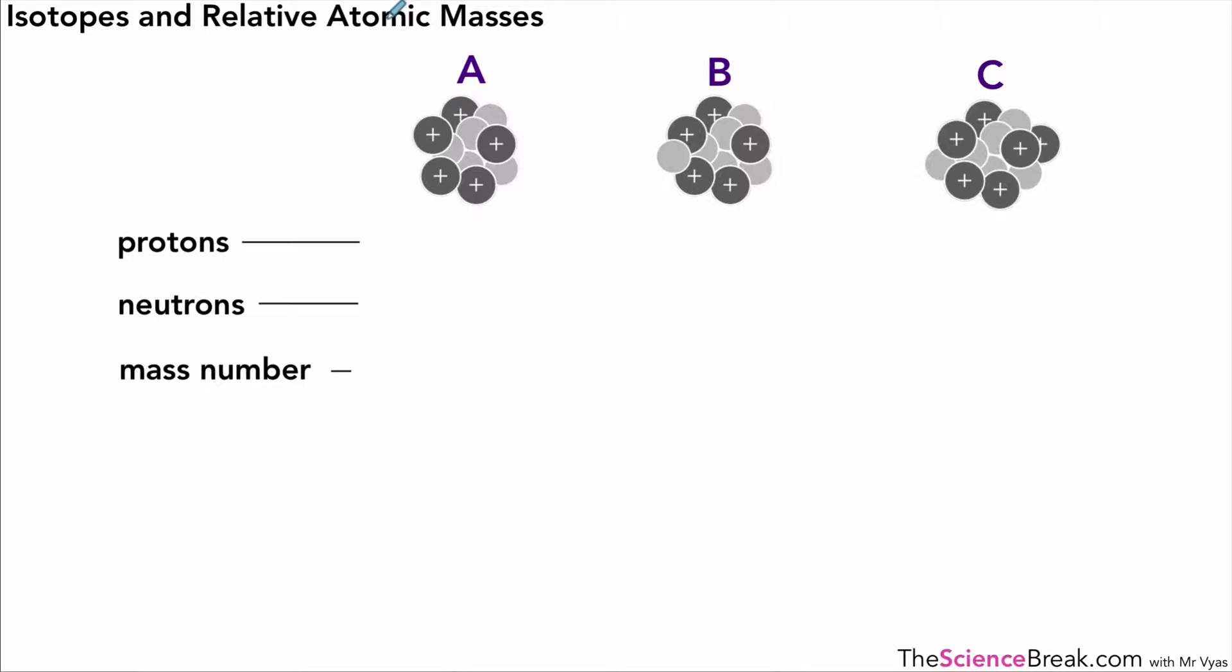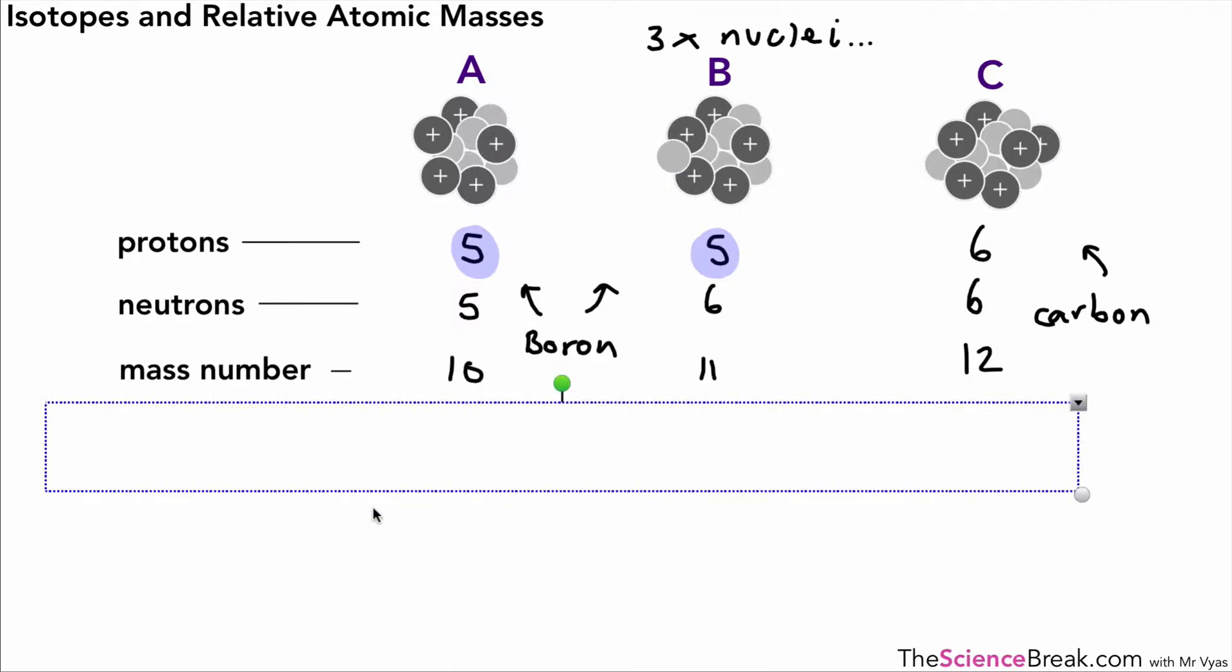Now let's look at this diagram with three nuclei—nuclei being the plural for nucleus. We haven't drawn the electrons, and we can work out which are isotopes. Diagram A has five protons, diagram B has five protons, and C has six protons. So A and B are isotopes. Counting neutrons, we have five for A, six for B, and six for C. A and B are isotopes of boron, which has a proton number of five. C is carbon because it has six protons.